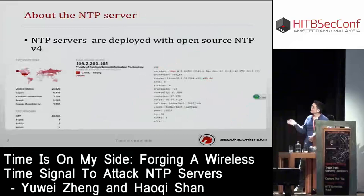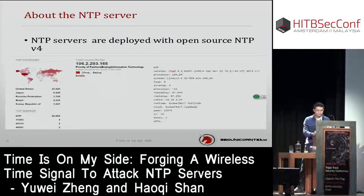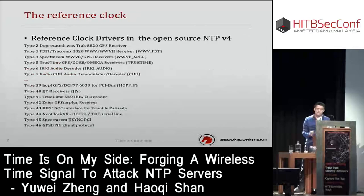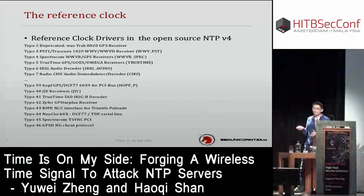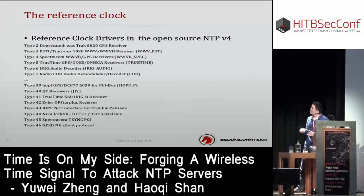A large amount of NTP servers are deployed with the open-source NTP version 4 software. From the newest NTP version 4 source code, we know that NTP version 4 supports almost 4,000 types of reference clock. The most commonly used are the WWB, DCF-77, JJY, MSF, and GPS.